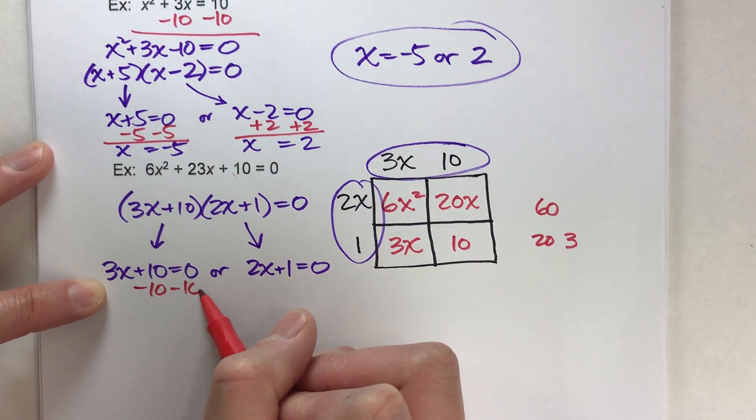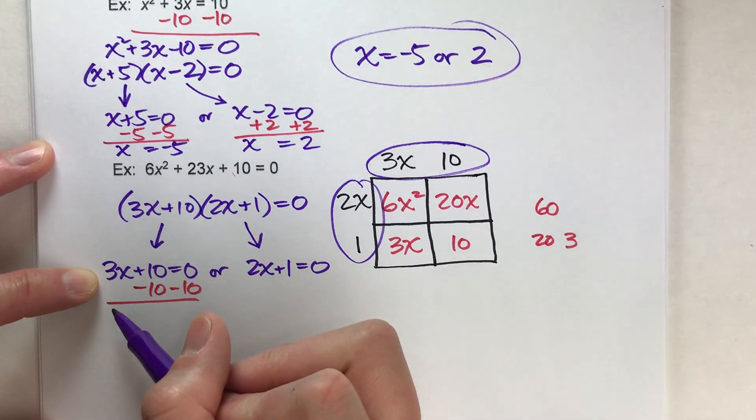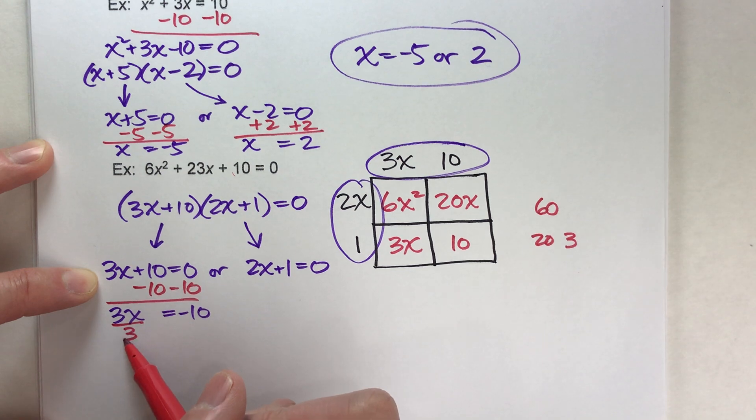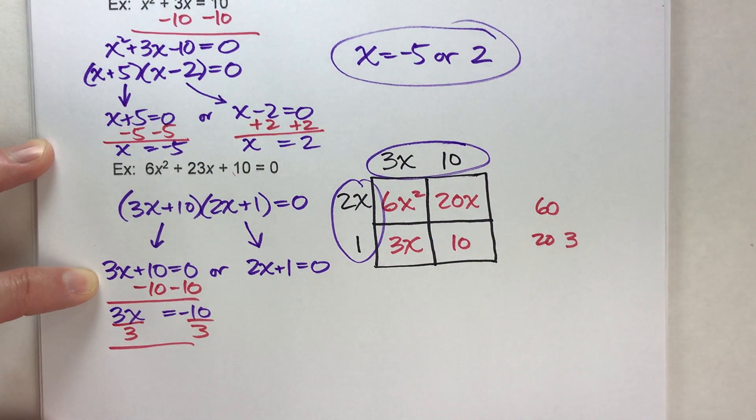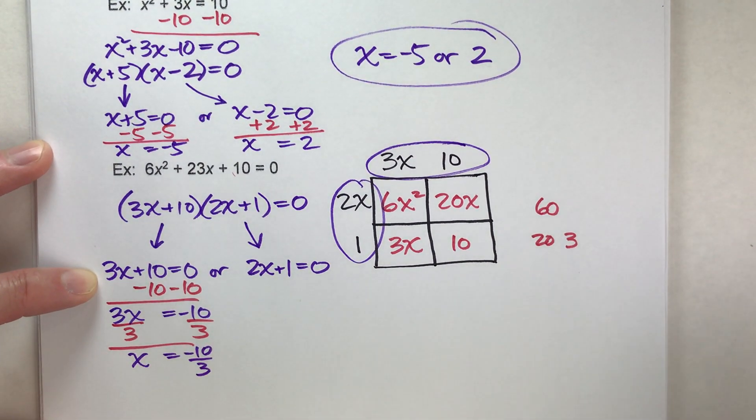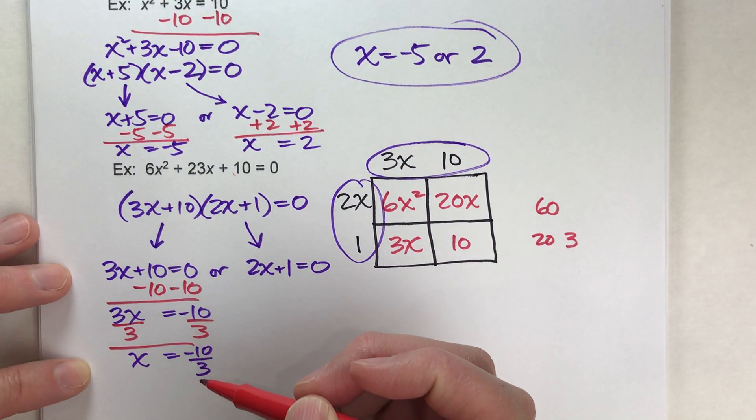We're going to have to subtract 10 on both sides. We end up getting 3x equals negative 10, and then divide both sides by 3. We get x equals negative 10 thirds. So there's one value.